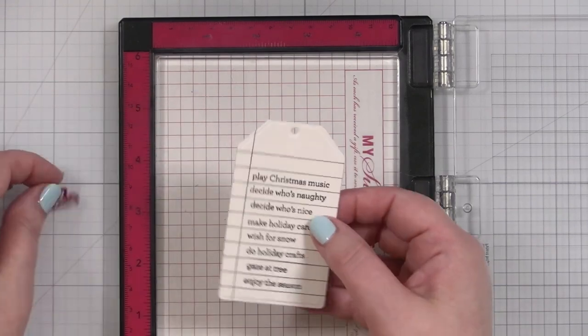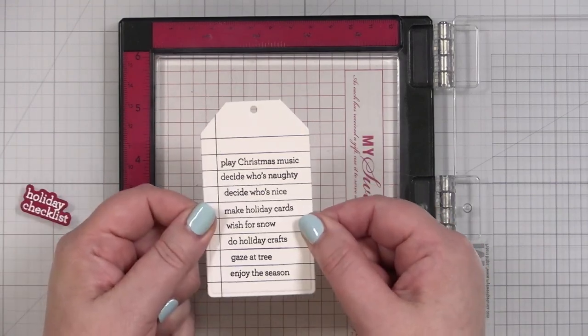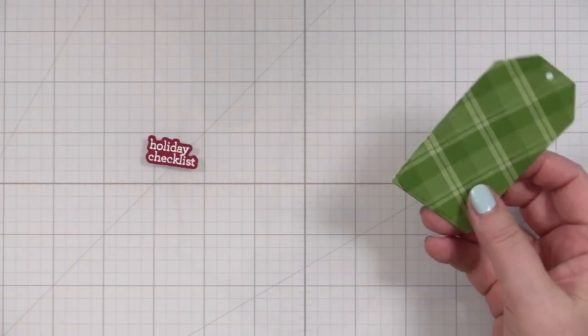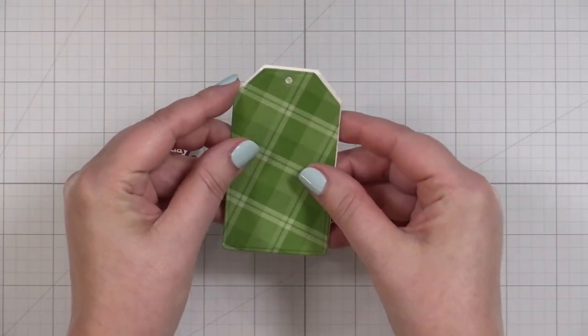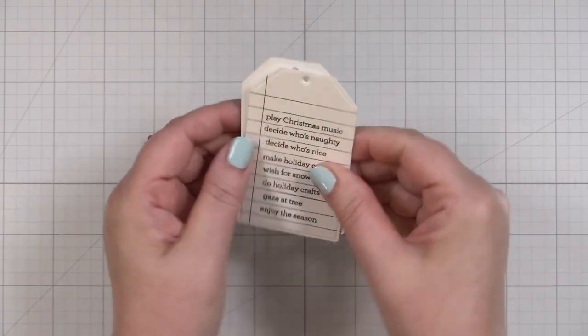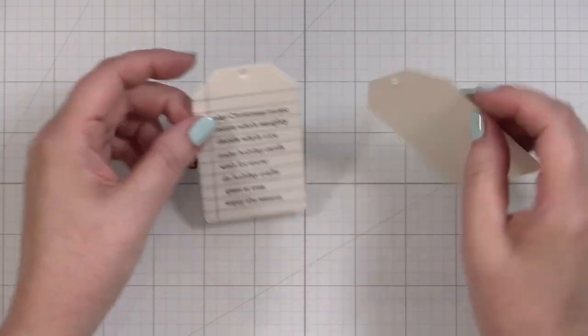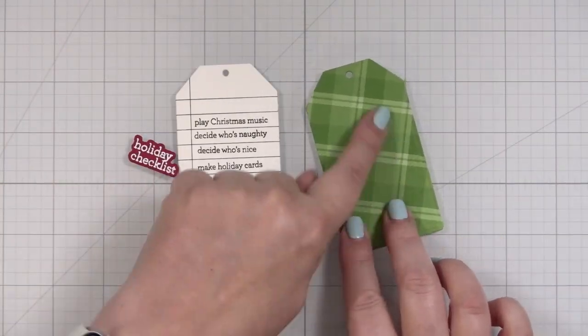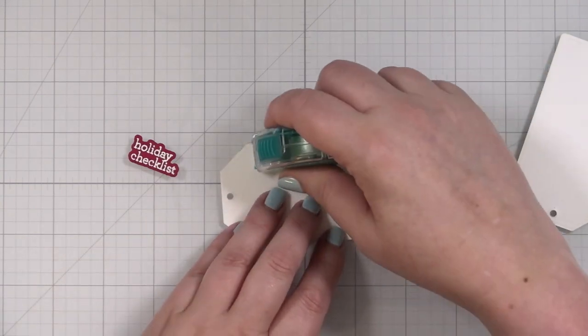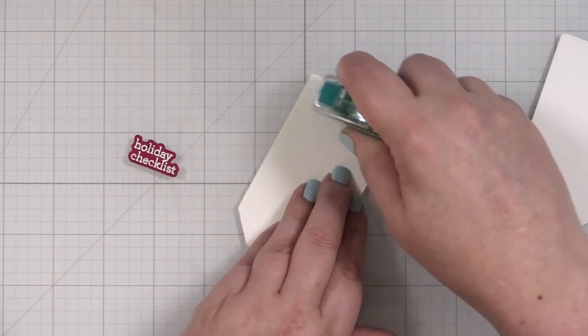Wish for snow and gaze at the tree. So that's the basics for the tag. I have one more fun thing you can do with this. One thing I like to do to finish off my tags is take some pattern paper to back onto the tag. That way, especially with a tag like this, it gives you a place to write a little note on, and it adds a little pop of Christmas color. This is from Lawn Fawn. I'll put my tape runner on my sturdier tag.